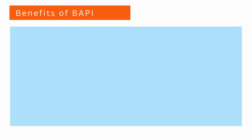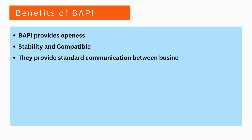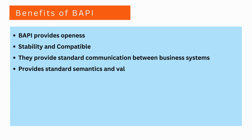Let's now talk about the benefits of BAPIs. BAPIs provide openness. They are stable and compatible. They provide standard communication between business systems, and they also provide standard semantics and validation rules for business object integration.